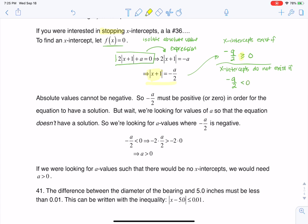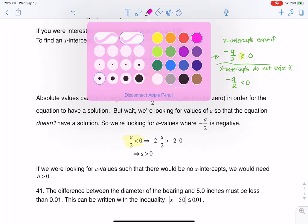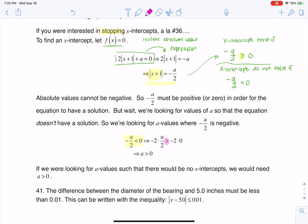And so that's where I'm coming up with this inequality here. And then what I did was I multiplied by negative 2 on both sides. And don't forget that when you multiply by a negative number, you have to change the direction of the inequality. So you see me going from less than to greater than. And when you wind up solving this, you're left with the inequality a is greater than 0. So if I was looking for values of a where there were no x-intercepts, I would pick any positive a value.